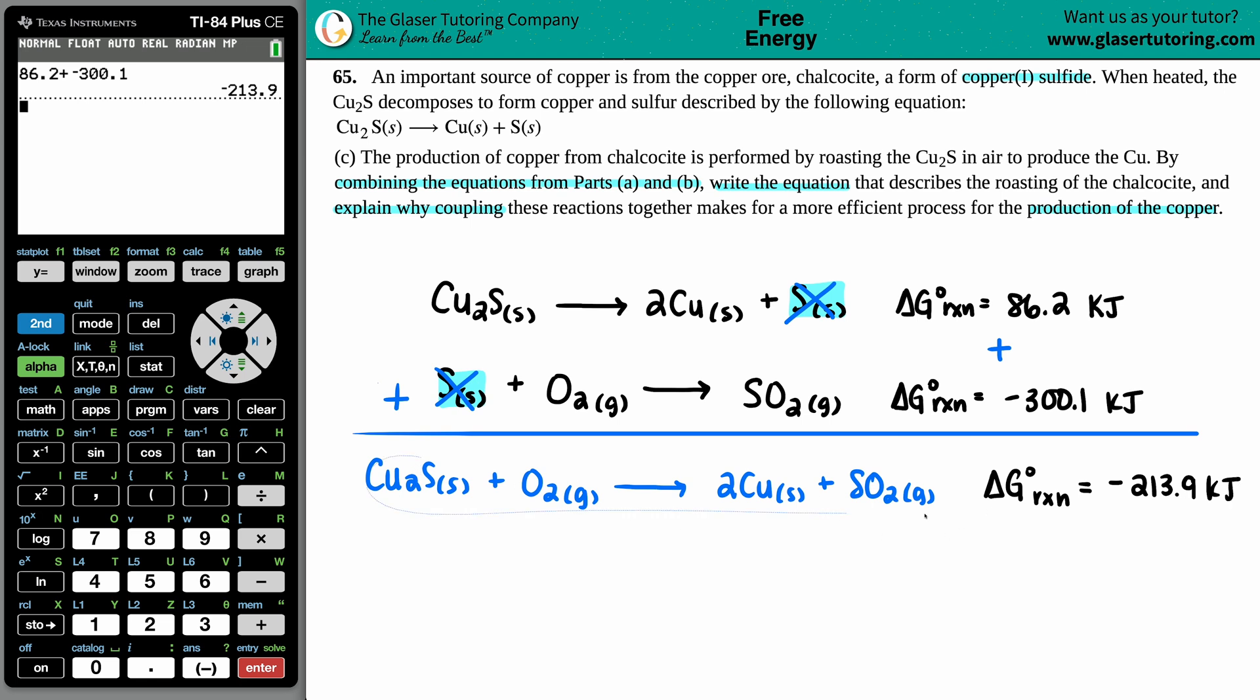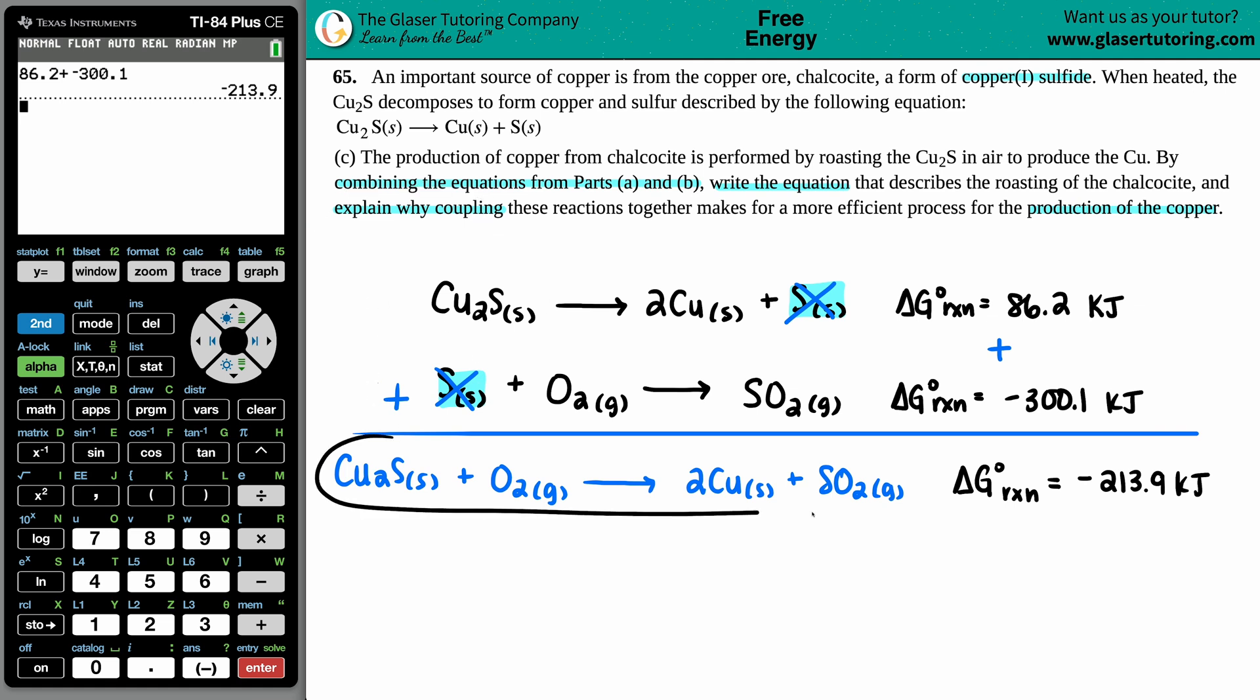So this is the answer to write the equation that describes this roasting. Now we just have to explain why coupling these up—why actually doing this to produce this net equation—is a more efficient process for the production of copper. Well, if I produce the copper this way, my delta G is negative 213.9.